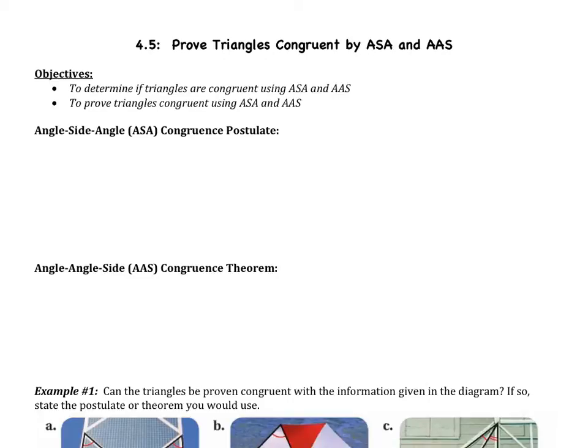Today's video is on section 5, which is proving triangles congruent by ASA and AAS. We're going to continue proving triangles congruent. Before today, we've learned three theorems: SSS, SAS, and HL. Today we are going to add two more congruency theorems.